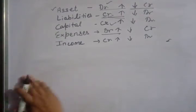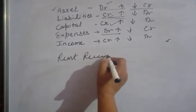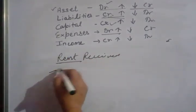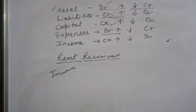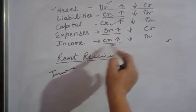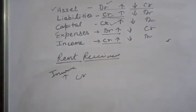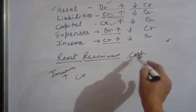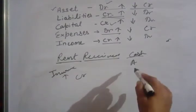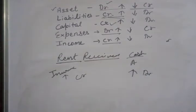Next example: Rent received. Rent received means income earned. Income received — your income increases. When income increases, it is a credit. Rent received — income is credited. And when you receive cash, the asset is growing, so it will be a debit. Cash is debited.